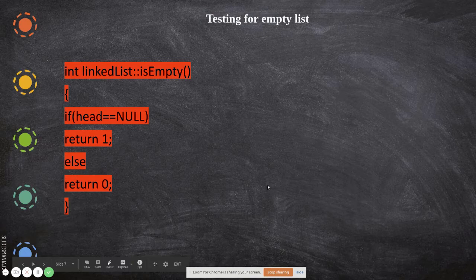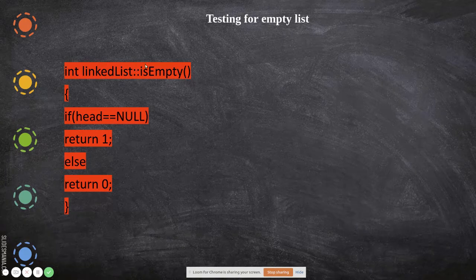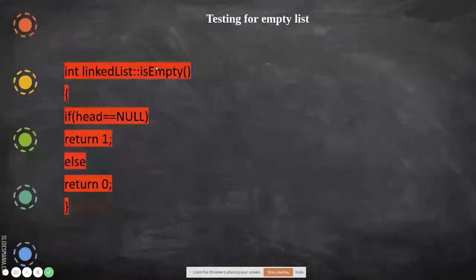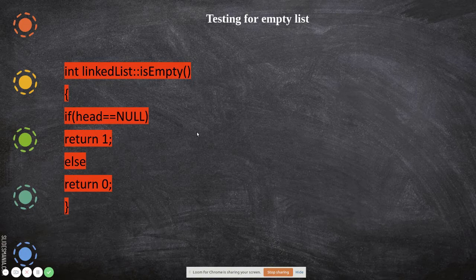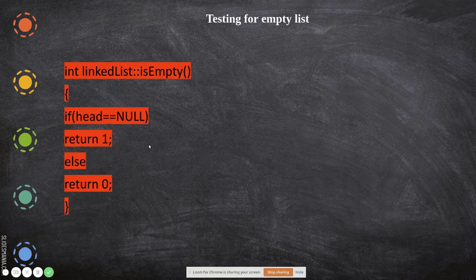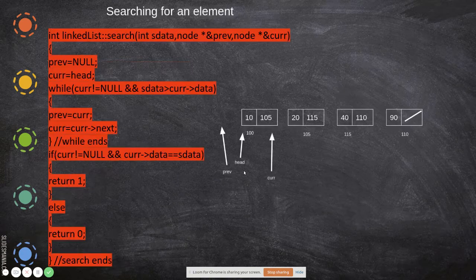In this video we will be seeing more operations of the ordered linked list. This function will check whether the linked list is empty or not. The name of the function is isEmpty. Here we check whether the head pointer is equal to null. If the head is equal to null, there is no node at all — we only make head null when there is no node. In that case it returns one, else it returns zero.